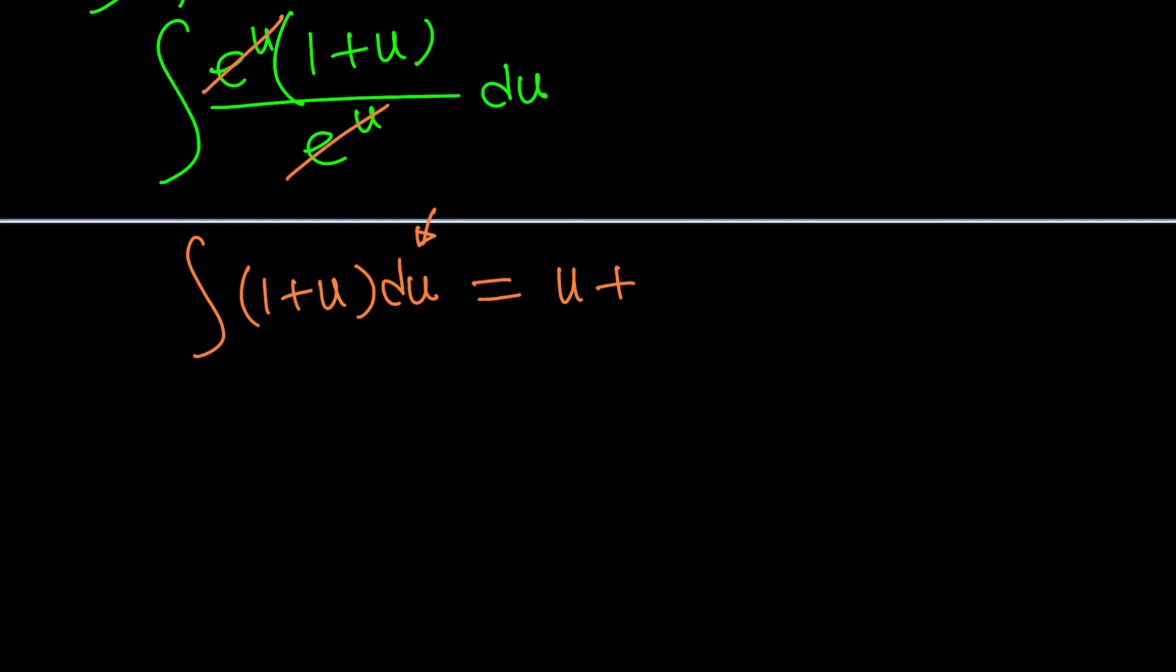And then, to integrate u, you're just going to use the power rule. That'll be u squared divided by 2. And then, of course, this will be our answer, but I don't think I need parentheses. And then, we're going to add our constant, which is something that you should never, ever forget.